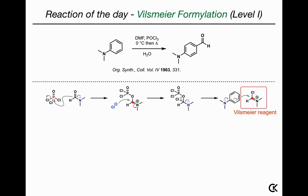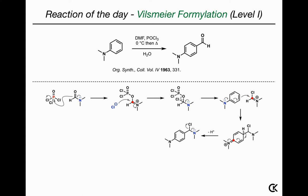This chloro-iminium reagent is now very reactive, and when it is reacted with an electron-rich arene, the electron-rich arene undergoes an electrophilic aromatic substitution. As usual for an electrophilic aromatic substitution, after the initial attack you get re-aromatization to give this alpha-chloroamine, which is not very stable.